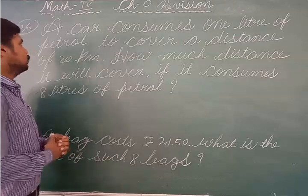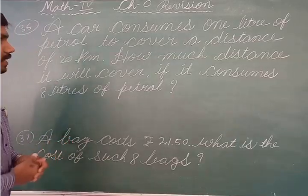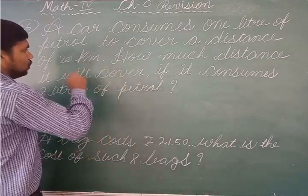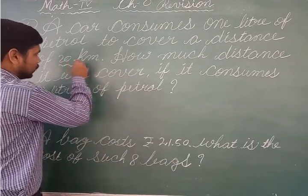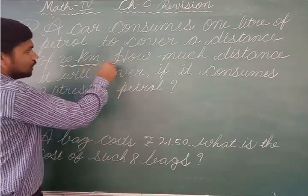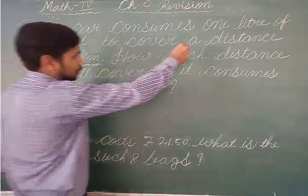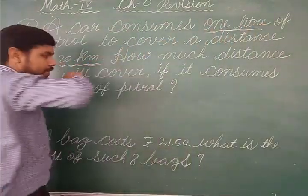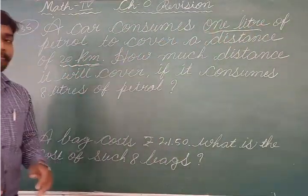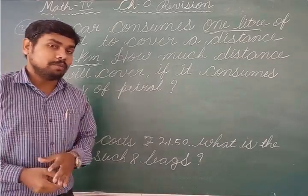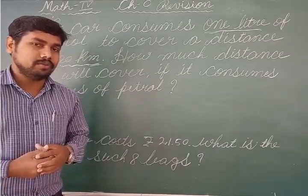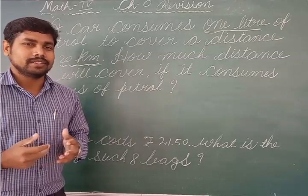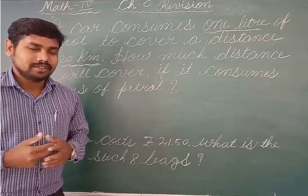Question number 36: a car consumes one liter of petrol to cover a distance of 20 km. That means in one liter of petrol, it is covering a distance of 20 km. So in two liters of petrol, how much km will it move? Very good — 40 km. In three liters, 60 km.